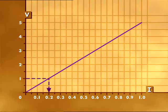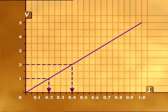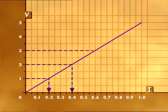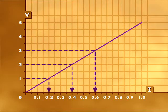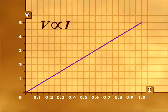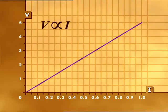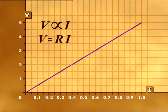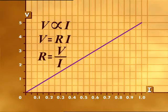If the voltage is doubled from 1 to 2 volts, the current is doubled from 0.2 to 0.4 amps. If the voltage is 3 times greater, the current is also 3 times greater. So V is proportional to I. If we call the gradient of the line R, this proportionality can be written as V = RI. Rearranging gives R = V divided by I.